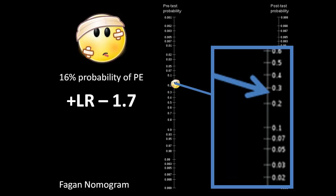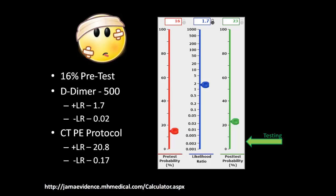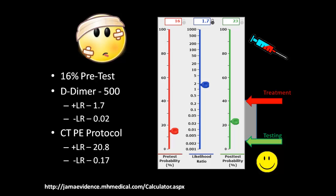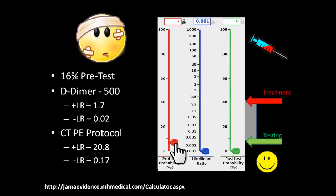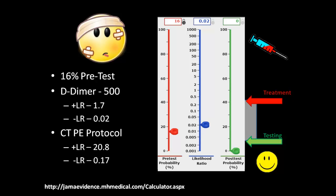The nomogram got us to the same answer without having to do all those calculations. JAMA Evidence has computerized this nomogram. On it, we can use the same testing and treatment threshold cut-offs, and we still have that same gray area. If Bob has a positive D-dimer, his post-test probability of PE would only be 24%, like we calculated before. If he has a negative D-dimer with a negative likelihood ratio of 0.02, his post-test probability is almost 0%. That would get him out of the gray area, and we could send him home.